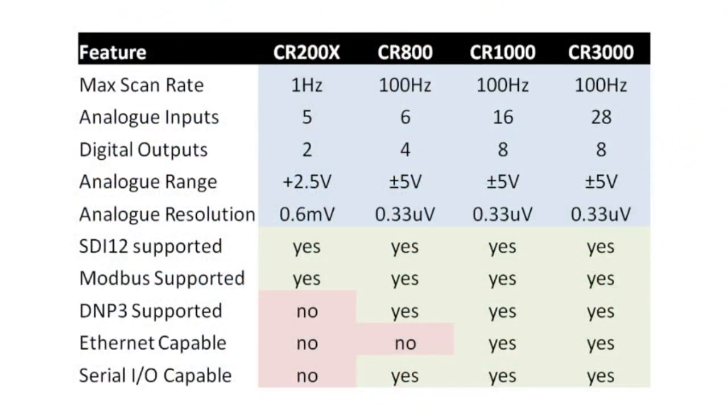Those are pretty much all the loggers in this video. We also sell the CR-5000 and CR-9000 — they're more expensive than the CR-3000 and are generally for people who want to measure really quickly, as they measure a lot faster. To end off, there's a comparison sheet comparing those four loggers — their voltage ranges, what protocols they support, and their scan rates, which is their measurement rate. Thanks very much for listening — I'll see you next time.